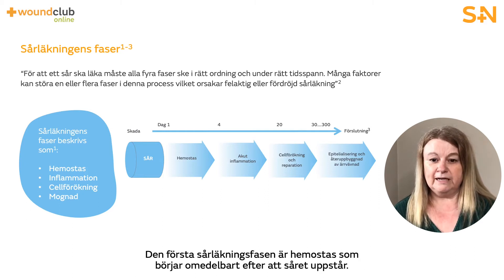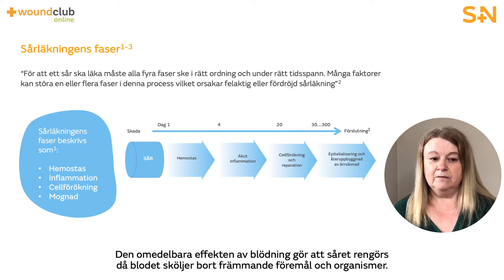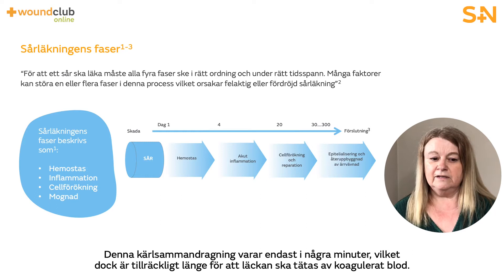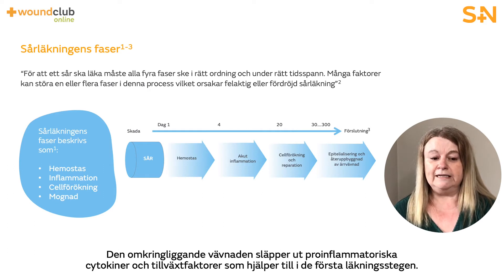The first phase of wound healing is haemostasis, which begins immediately after the wound occurs. Bleeding has the immediate effect of cleansing the wound as the blood washes away foreign bodies and organisms. To prevent further bleeding, vascular constriction and fibrin clot formation occurs. This vasoconstriction lasts for only a few minutes, just long enough for the leaks to be sealed by blood clots. The surrounding wound tissue releases pro-inflammatory cytokines and growth factors, which help with the first stages of healing.